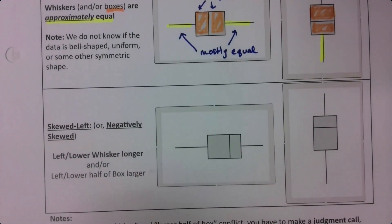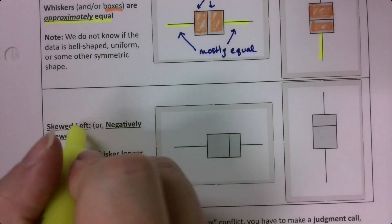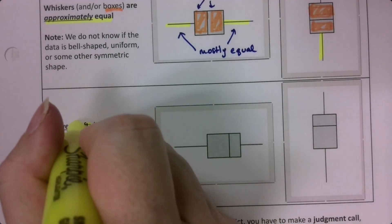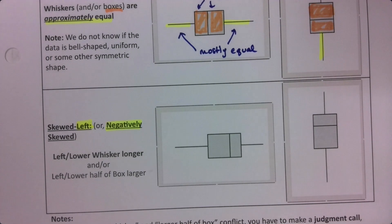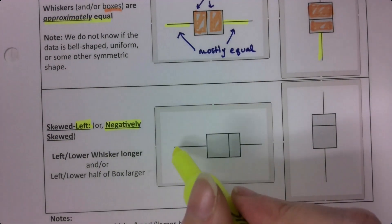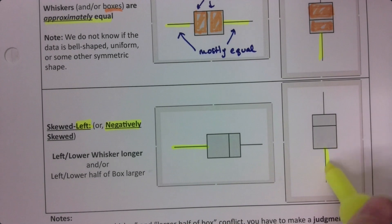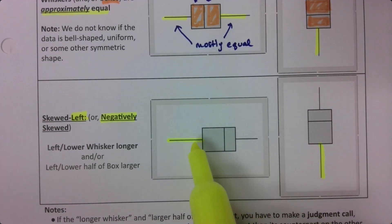If it's skewed left, then that's going to mean it's negatively skewed. So some books talk about skewed left, some books talk about negatively skewed, they mean the same thing. It means that you have a longer whisker on the low side. And it could be vertically or it could be horizontally. The same thing.